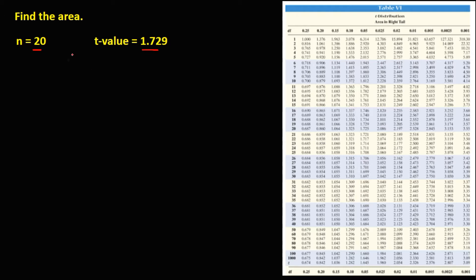First, we need to solve for the degrees of freedom. The formula for the degrees of freedom is n minus 1. So n is 20 minus 1, therefore the degrees of freedom is 19.